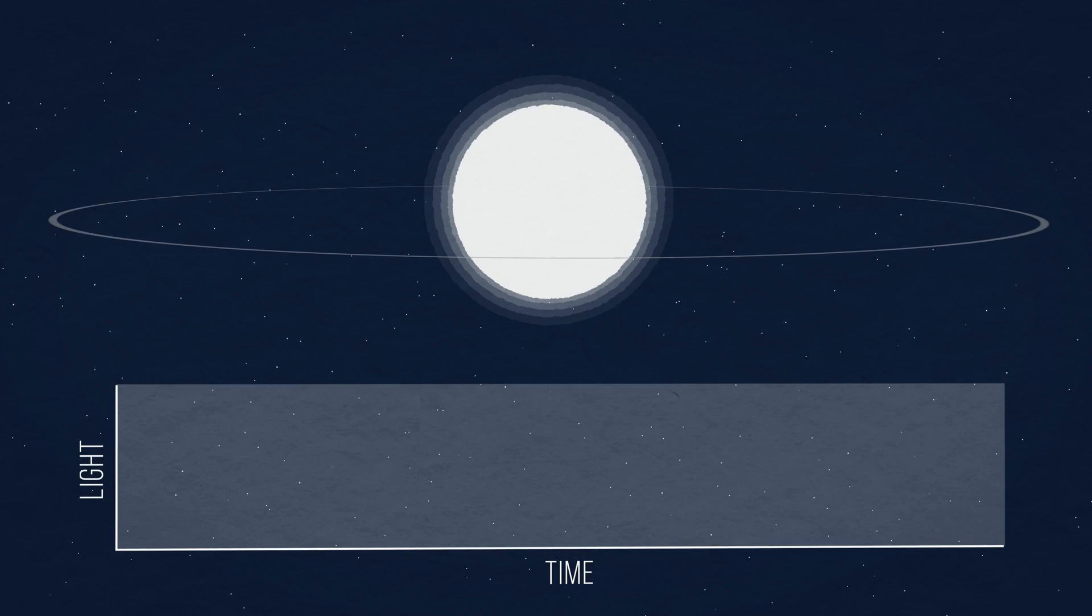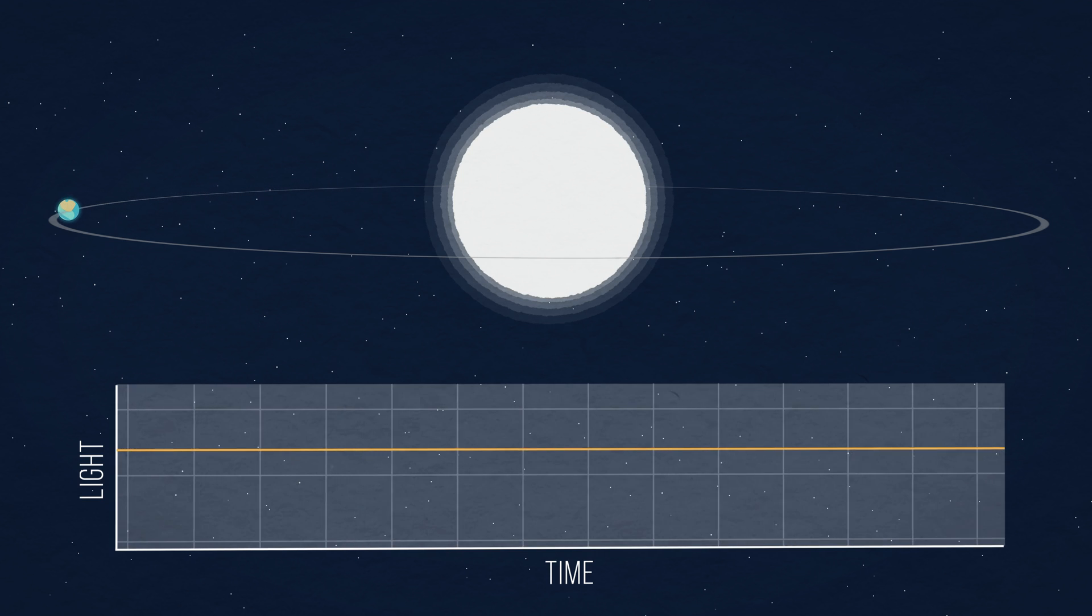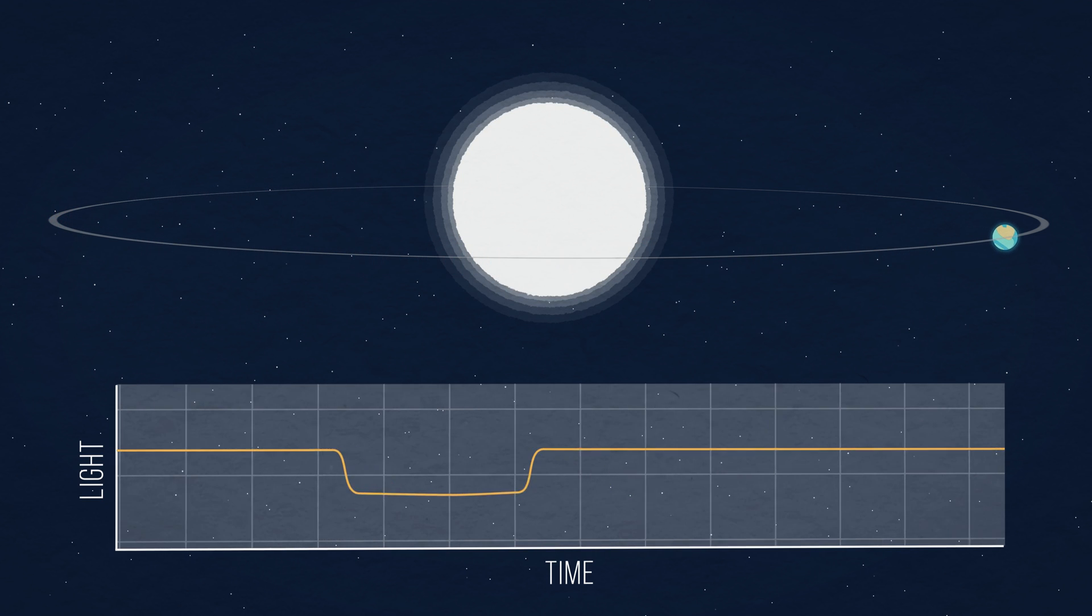The majority of known exoplanets have been discovered because they partially block the light of their host star. This is called a transit.